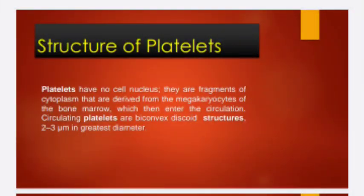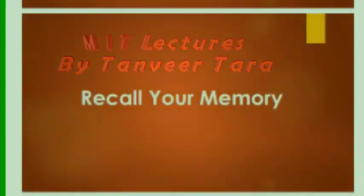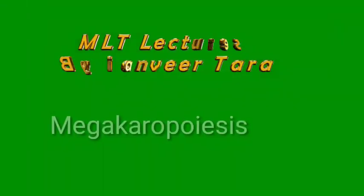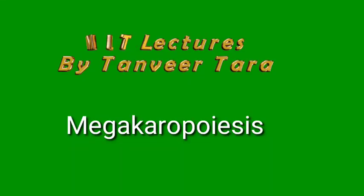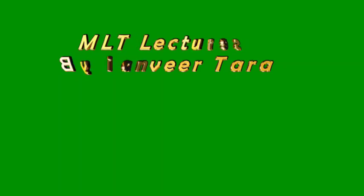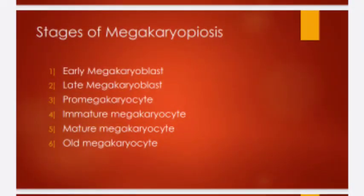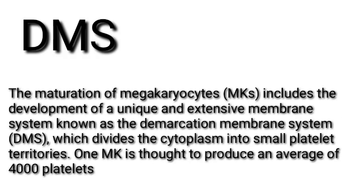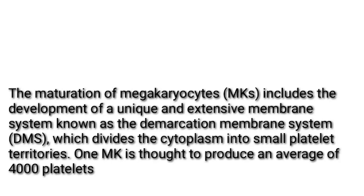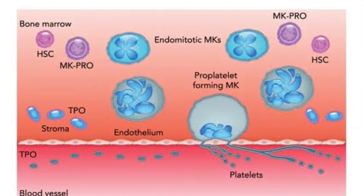Before starting the structure of platelet, we have to recall our memory from our previous lecture which was uploaded previously — that was megakaryopoiesis. There are different types of maturation series: the first was early megakaryoblast, then late megakaryoblast, then pro-megakaryocyte, immature megakaryocyte, and finally old megakaryocyte. We discussed the DMS or demarcation membrane system, how pro-platelets produce small teeny platelets, and why platelets are not exact cells but are basically the shreddings of the pro-platelets.